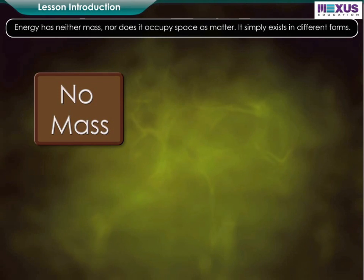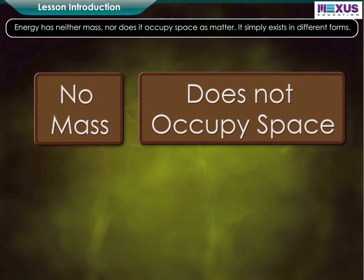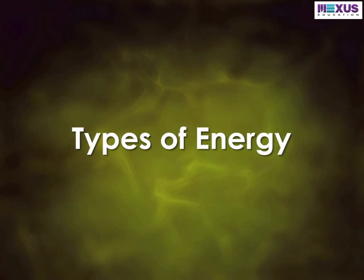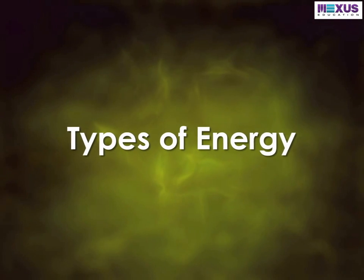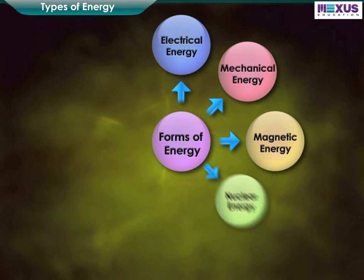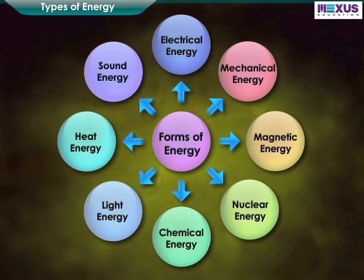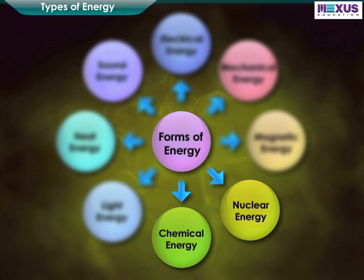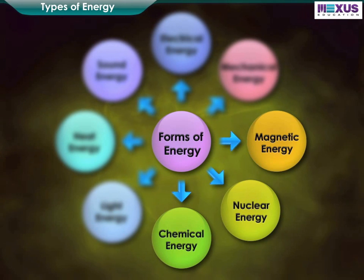Energy has neither mass nor does it occupy space as matter. It simply exists in different forms. While chemical energy, nuclear energy, and magnetic energy are energy in stored form.